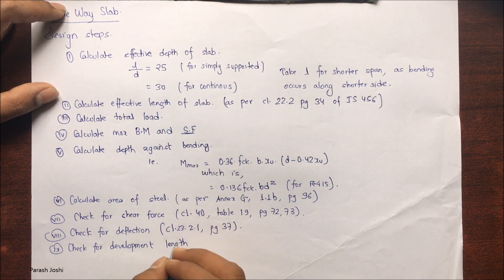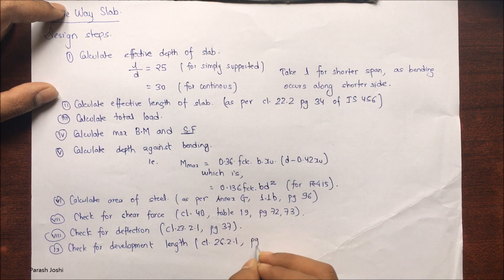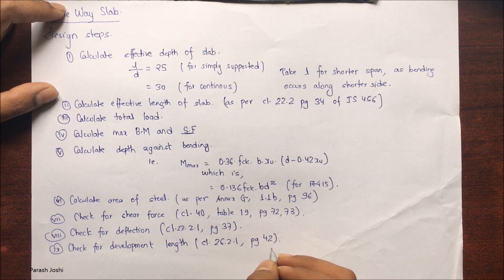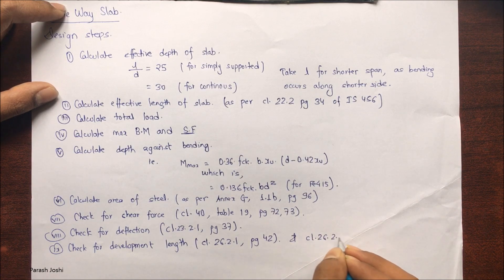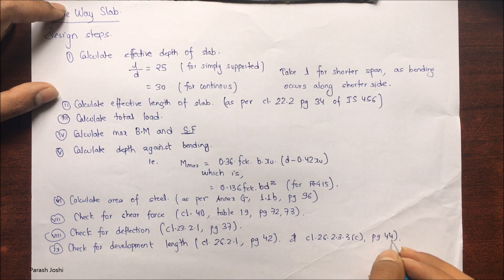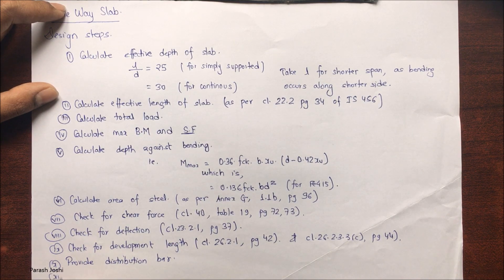The ninth step is to check for the development length, which is necessary for developing the bond between the bars. This is from clause 26.2.1 page 42 and clause 26.2.3.3 c page 44. Tenth step is providing the distribution bar, and eleventh step is reinforcement detailing, that is the size and drawings of the reinforcement.